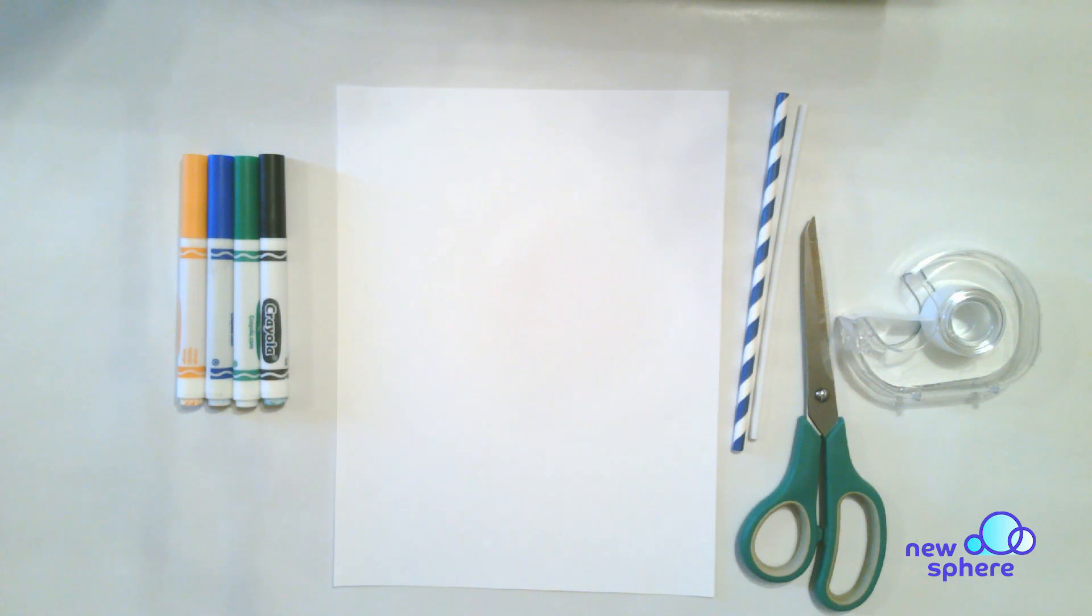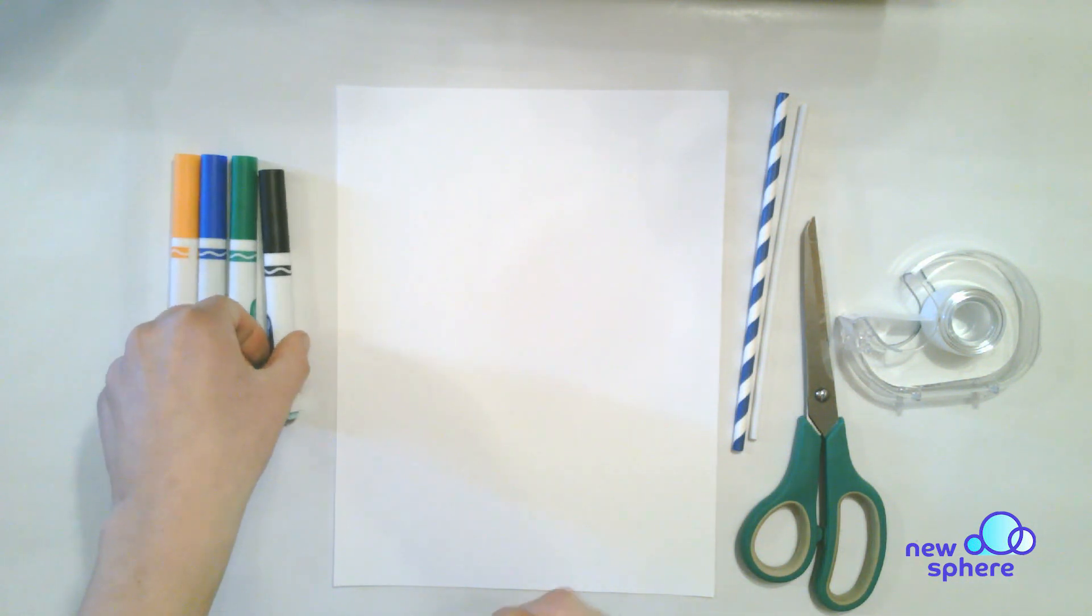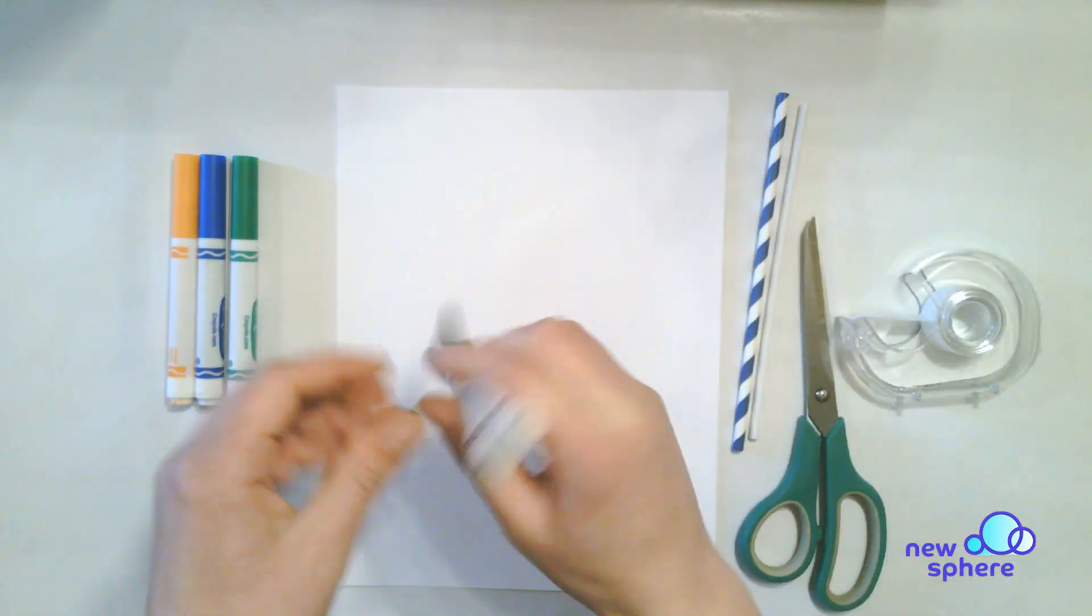Let's get started! First, draw your rocket. Make sure to draw a rocket small enough to fit on your straw.